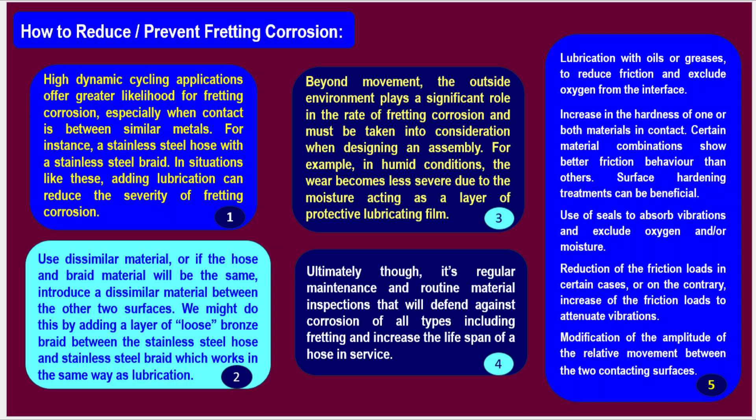Beyond movement, the outside environment plays a significant role in the rate of fretting corrosion and must be taken into consideration when designing an assembly. For example, in humid conditions the wear becomes less severe due to moisture acting as a layer of protective lubricating film. Ultimately, it is regular maintenance and routine material inspections that will defend against corrosion of all types, including fretting, and increase the lifespan of a hose in service.